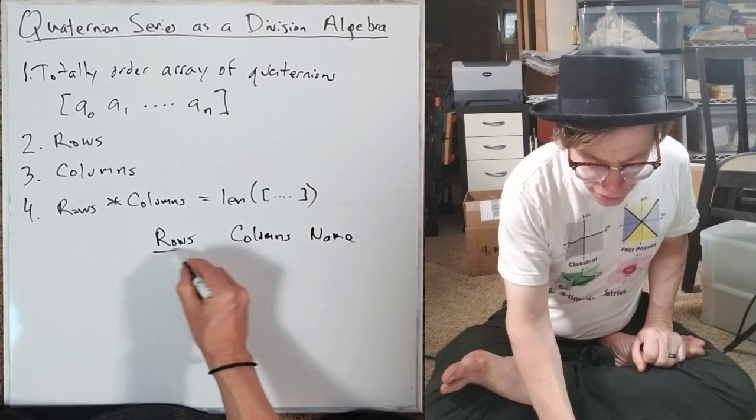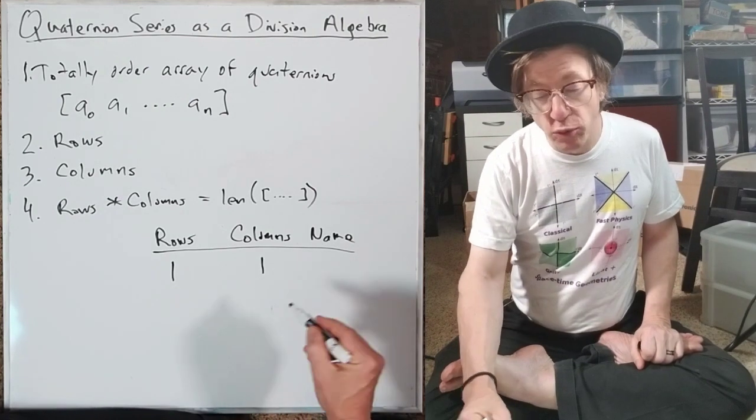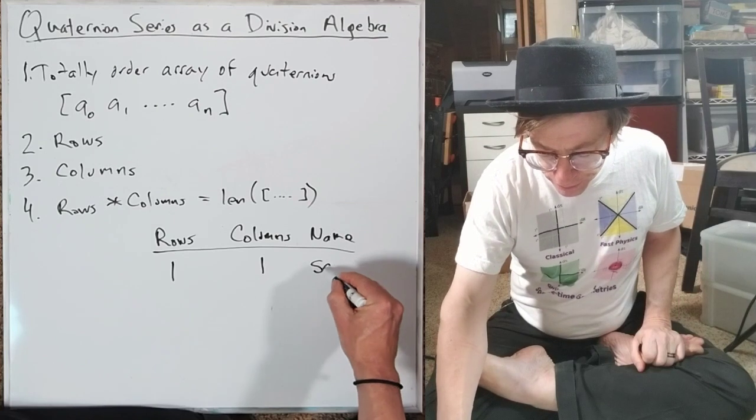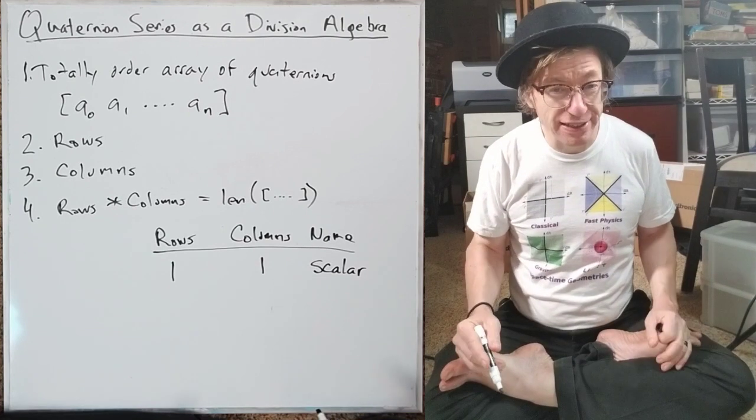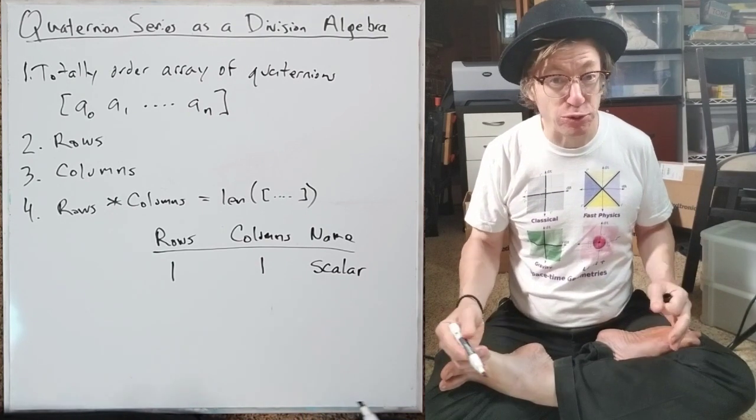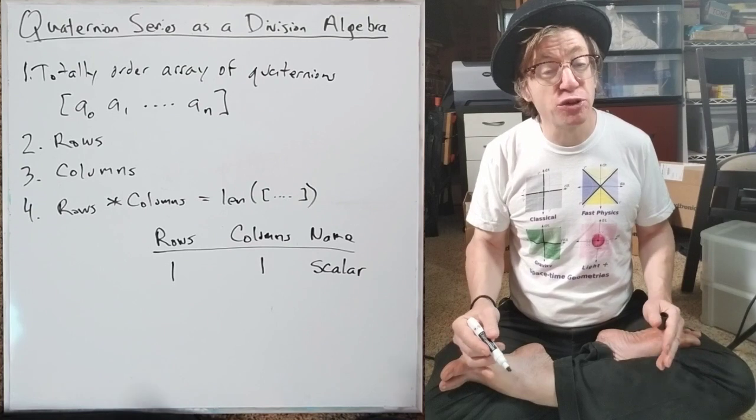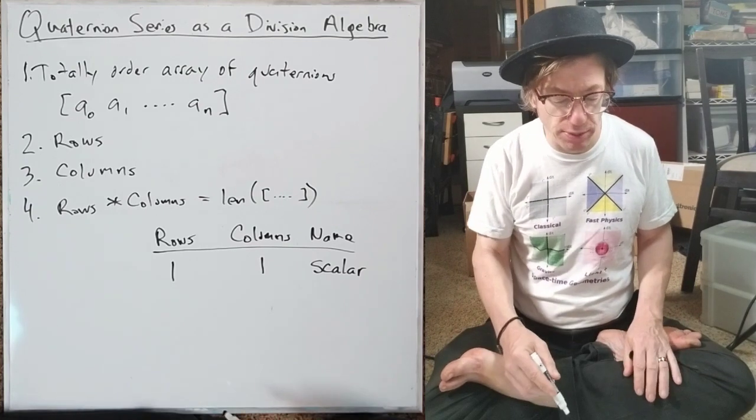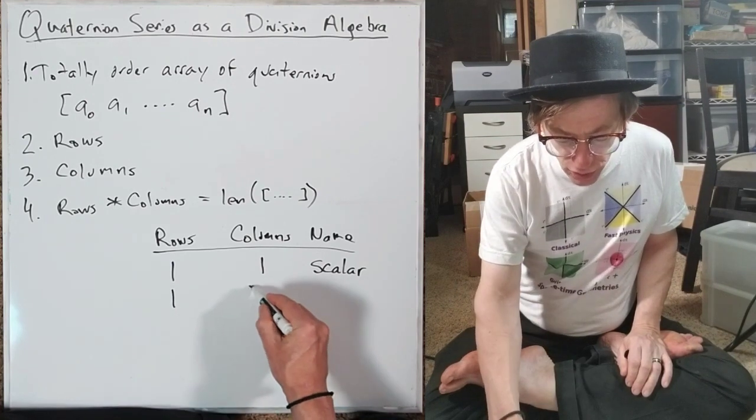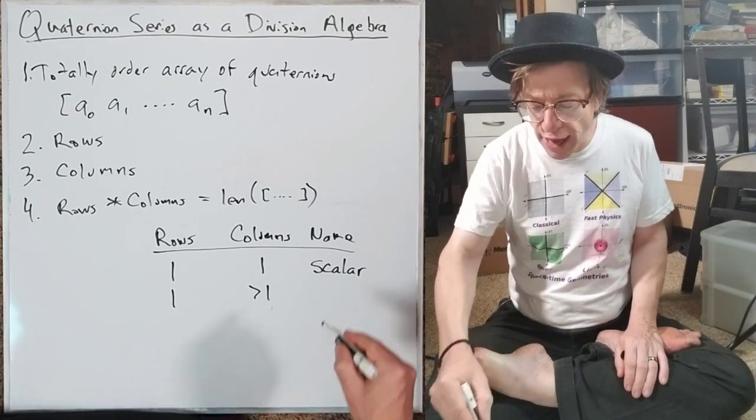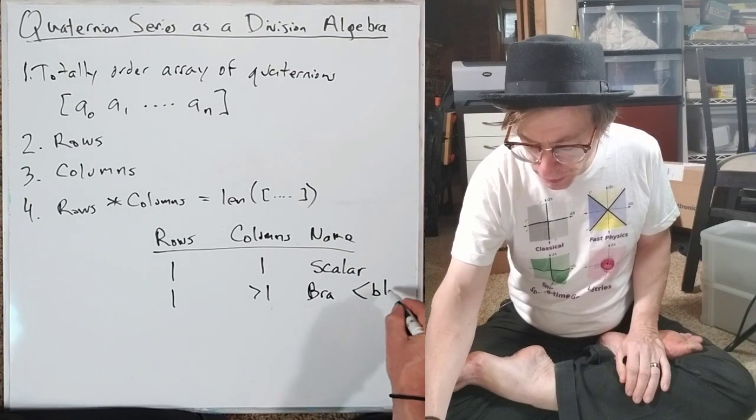Now you might say, hey, this sounds a lot like matrix algebra, and it is very, very similar to that with one important technical variation that I'll get to. So if the number of rows is one and the number of columns is one, then we'll call this Quaternion series a scalar. And as a matter of fact, the scalar Quaternion series behaves just like an actual Quaternion, except that it is always a different thing because a Quaternion series always has this row and column information. But let's say the rows is just one, and the columns is greater than one, then what we're going to call that is a bra.